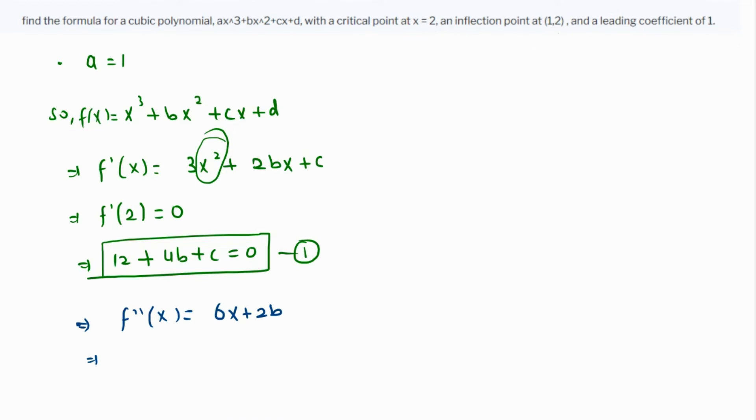f''(1) = 6 + 2b = 0, which means 2b = -6, so b = -3.